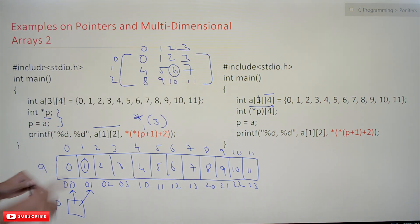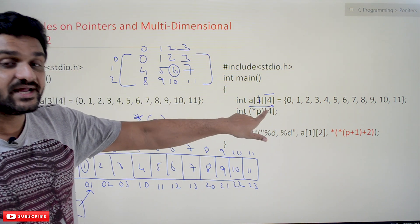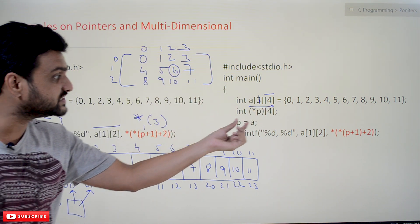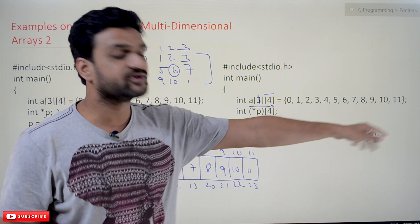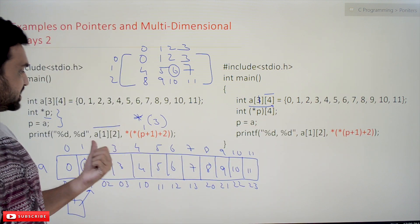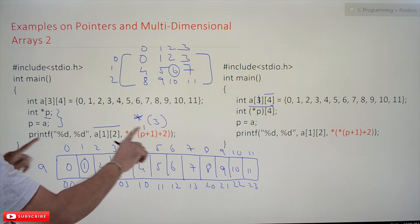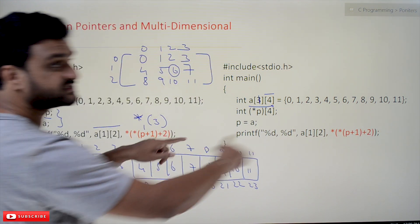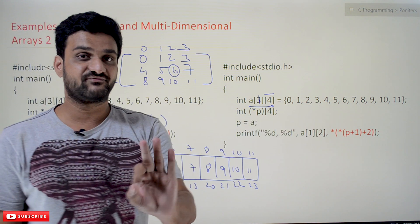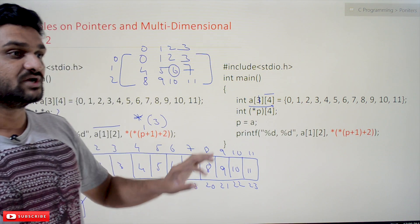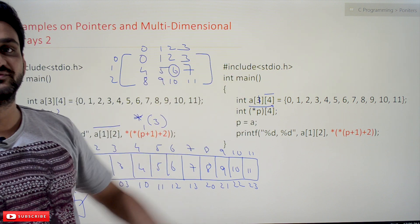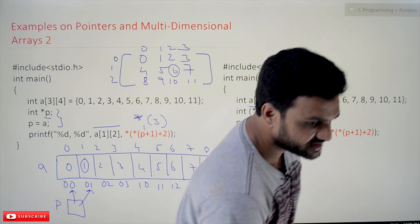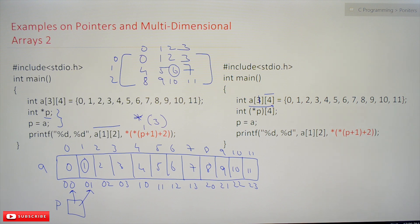So: this is an integer pointer, and this is a two-dimensional array pointer — try to get that distinction. Now P is assigned to 'a'. We are going to use the same printf statement. The first declaration is going to generate an error, and the same printf with the second declaration is going to work perfectly fine. Let's try to execute both and see.